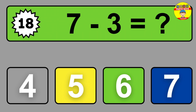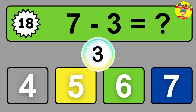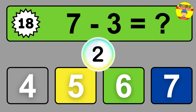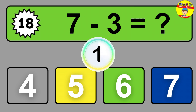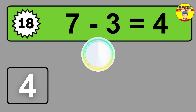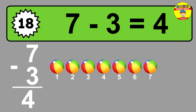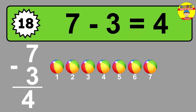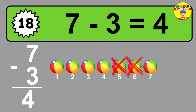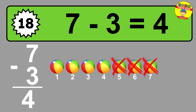Question 18. 7 minus 3 equals what? So the answer is 7 minus 3 is 4. Let's count it: 1, 2, 3, 4.